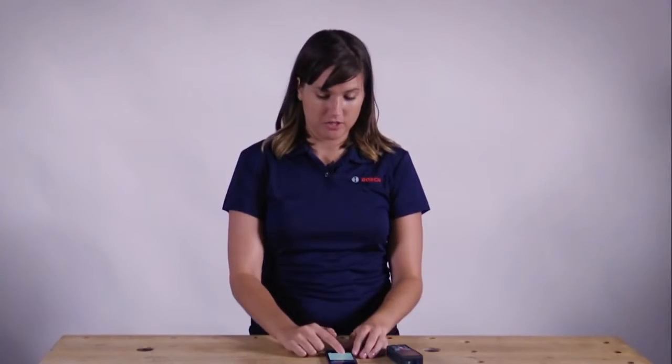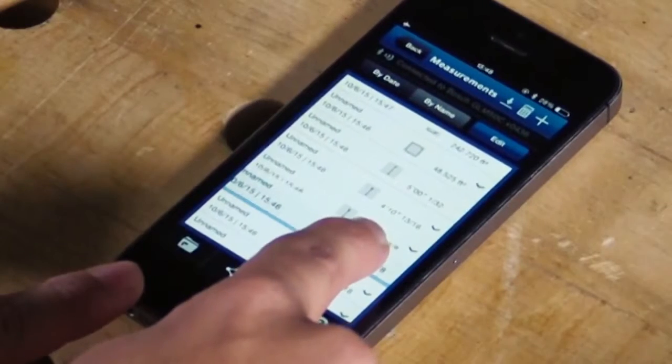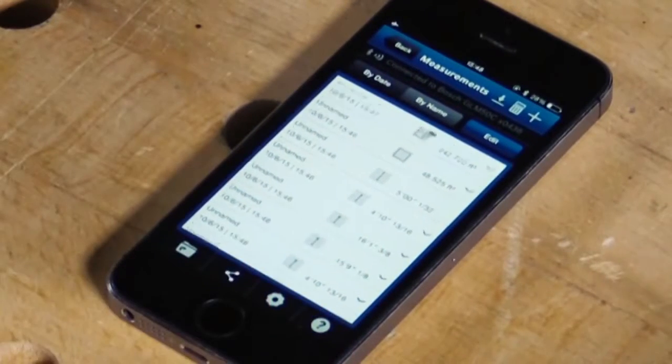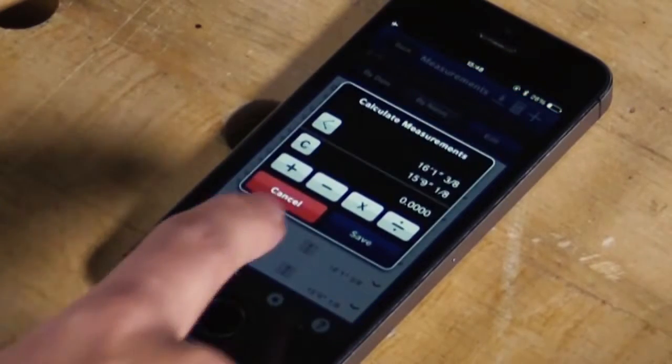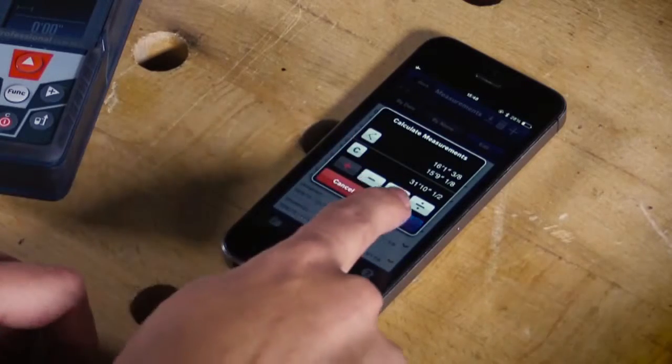The second way to do calculations is to grab one measurement, drag it over the second measurement that you are looking to do calculations with and then a menu pops up where you can decide to add, subtract, multiply, or divide and then once you've done that save your measurement.